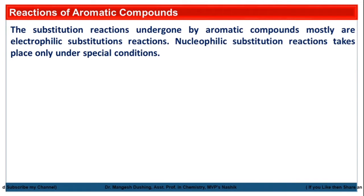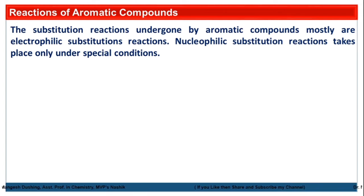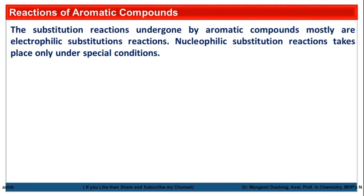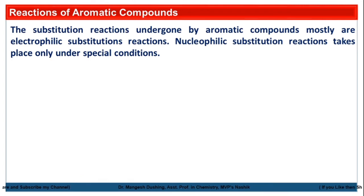Aromatic compounds show substitution reactions, and these are mostly electrophilic substitution reactions. Nucleophilic substitution reactions take place, but only under special conditions. Since benzene rings or aromatic compounds are rich in pi electrons, they act as Lewis bases, so they mostly show electrophilic substitution reactions. In some rare conditions, they show nucleophilic substitution reactions.